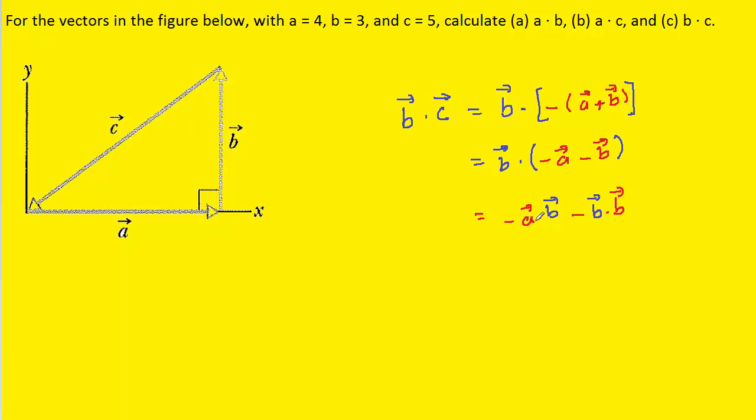We could then distribute vector B into the parentheses. Now in front here, once again, we have the dot product between vectors A and B. We already determined that to be zero in part A of the question.